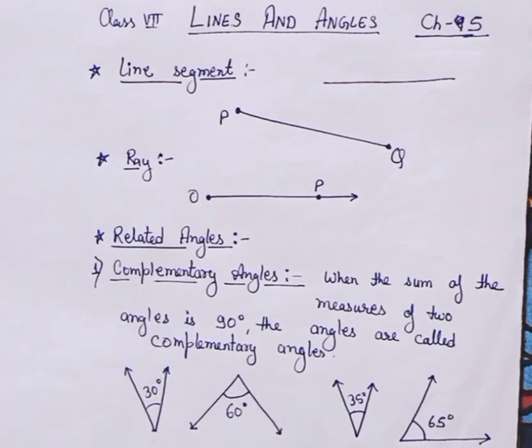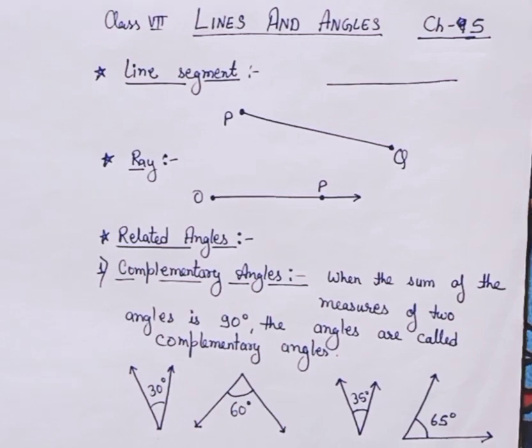Or simply complementary to each other. So here, it is simply a pair of angles. When we are going to add those pairs, we'll get the answer 90 degrees. If two of the angles on adding give 90 degrees as an answer, then they are said to be complementary angles.